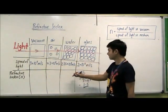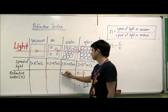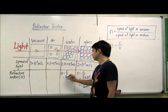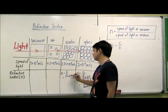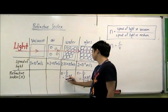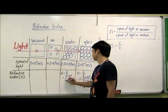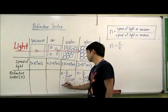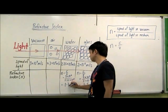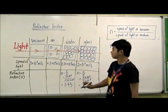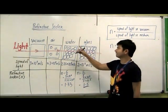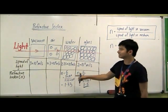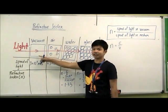Now let's move on to the refractive index of water. N equals C over V: 3 times 10 to the power of 8 divided by 2.25 times 10 to the power of 8. We get 1.33. So basically, it means that the speed of light in water is 1.33 times slower than the speed of light in vacuum.